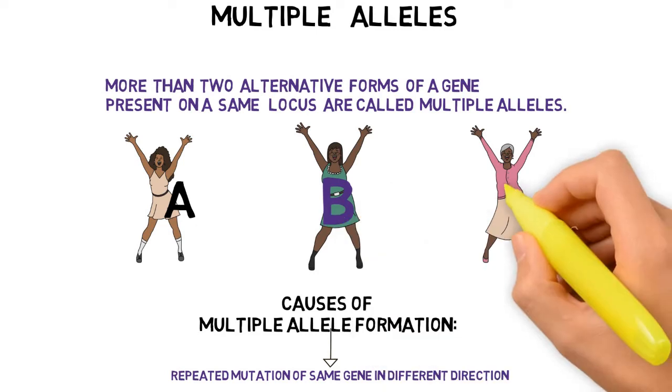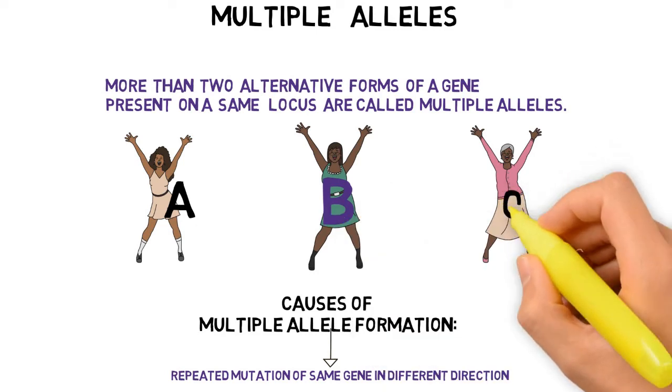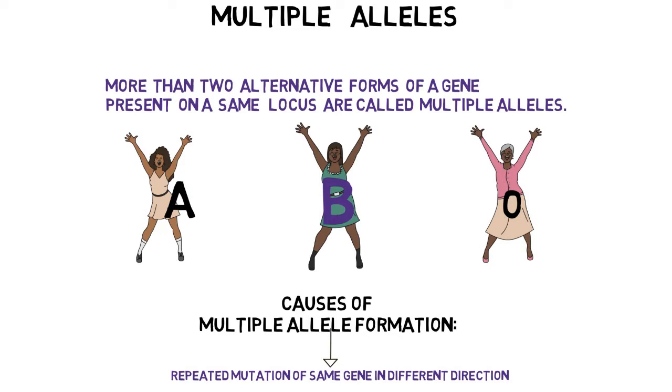So this is the human blood group — the ABO system of human blood group. It's the best example of multiple allelism.